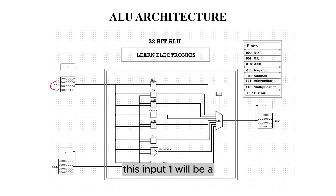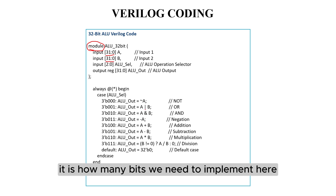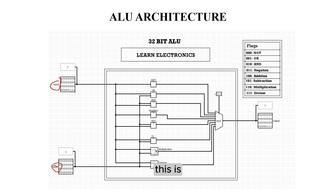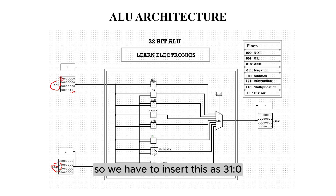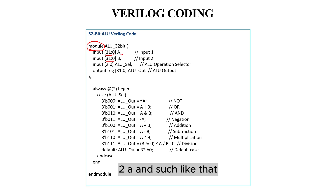Input 1 will be A and input 2 will be B. These inputs will be declared here, and what this means is how many bits we need to implement. Here this is the 0th bit, 1st bit, 2nd bit and this is the 31st bit. So we have to instantiate this as 31 to 0, meaning 0A, 1A, 2A and so on. We also give input 2 in the same way.